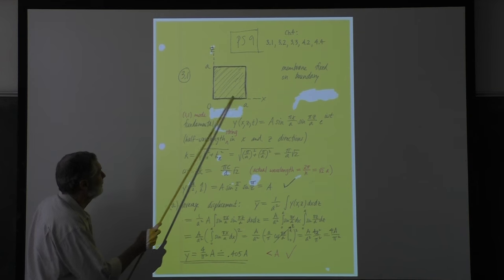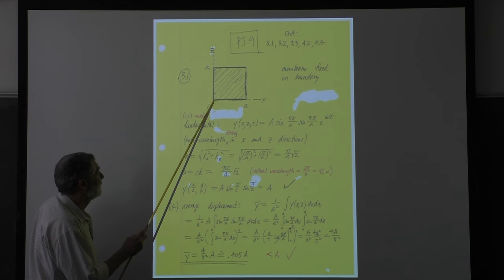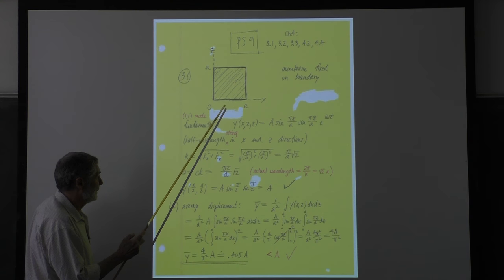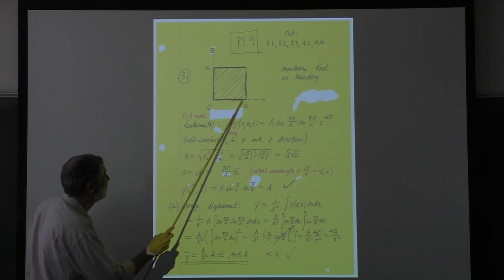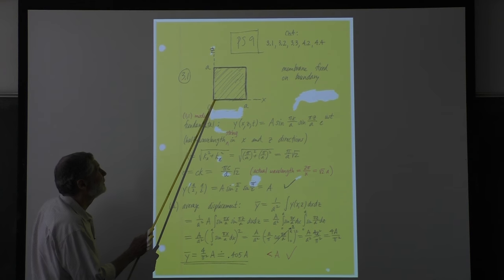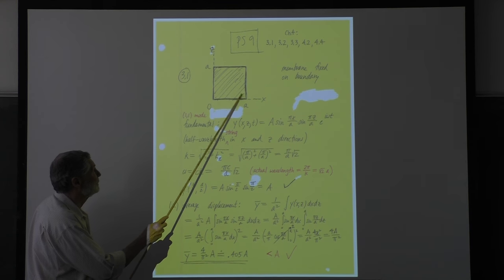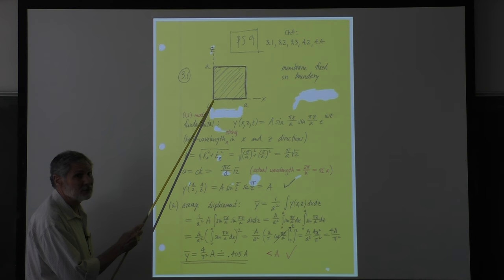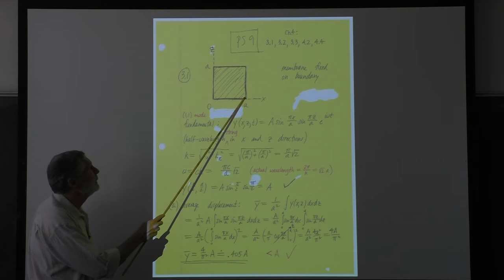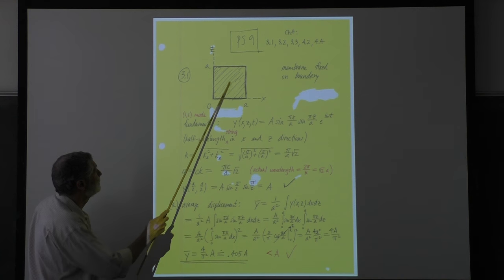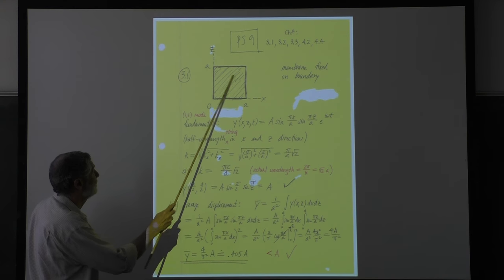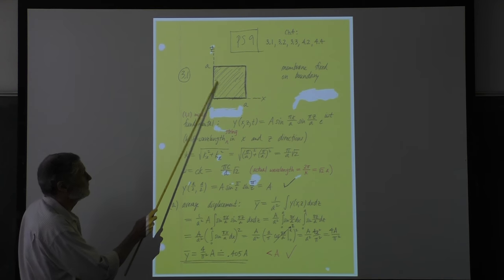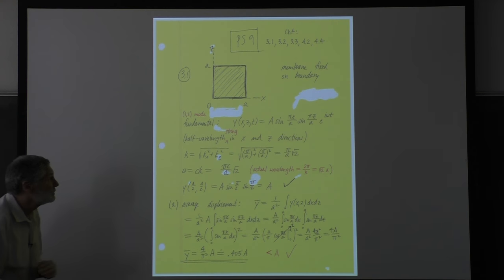The way people usually think about it is they think of a string. A string going along here - the lowest mode is going to be the half wavelength mode. Similarly, a string going along the other direction is going to be half wavelength. In this case, those two distances are the same.